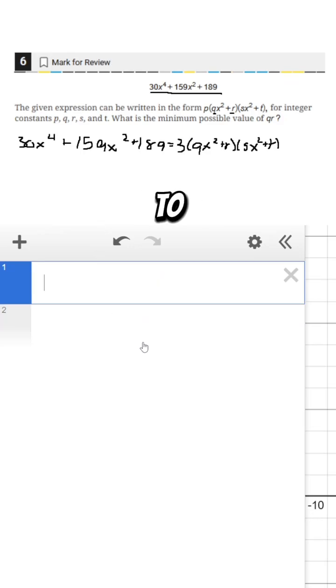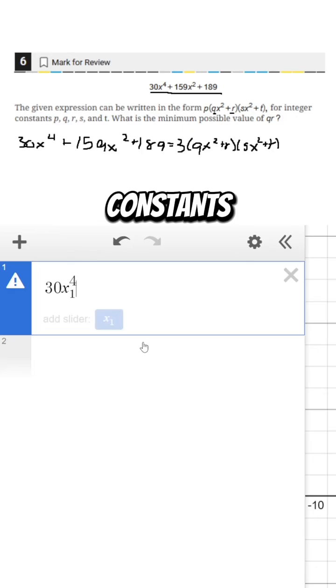So we need to use x1 and tilde for this because we're going to have Desmos guessing constants for us.